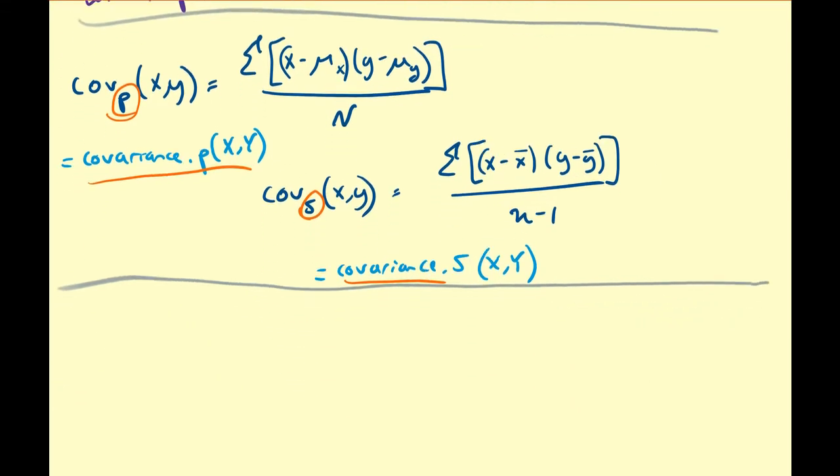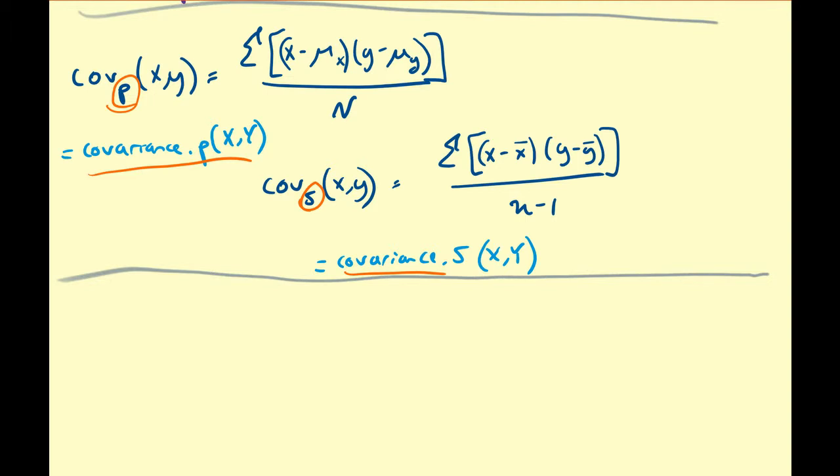Alright, so let's work through an example manually and then discuss how to interpret the covariance of a data set. So let's assume we have a sample of X and Y values. Suppose this is 2, 5, 3, 7, and 4, 12.